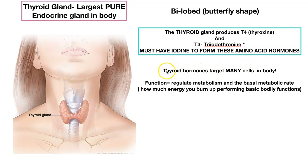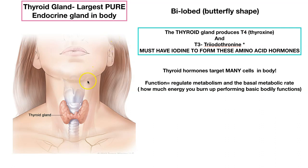What stimulates the thyroid gland to secrete its hormones? The anterior pituitary gland, with TSH — thyroid stimulating hormone. The thyroid gland is the target organ for TSH, which will cause the thyroid gland to release T3 and T4.